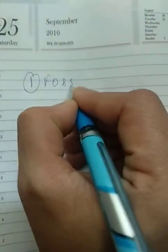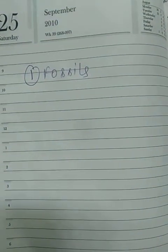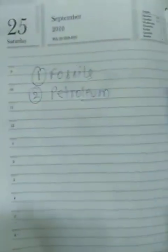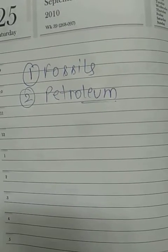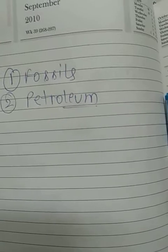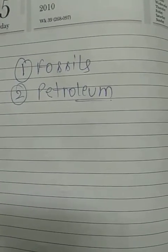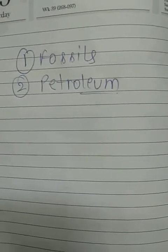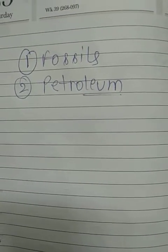Today we will revise chapter number 5: Coal and Petroleum. The important points are fossils, which are the remains of plants and animals trapped between layers of rock, and petroleum, which is a crude oil. These are natural resources — substances which we get from nature to fulfill our needs. Coal and petroleum are examples of natural resources.